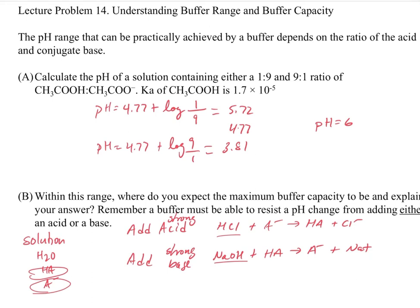So now the question is, well, where are we going to have maximum buffer capacity between 1 to 9 and 9 to 1? And so the answer to this is going to be, where do we have the most A minus and the most HA?